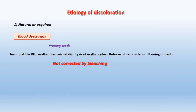Another cause is blood discoloration, which happens in primary teeth due to hemolytic anemia called erythroblastosis fetalis. The child has a different RH type from the mother, leading to RH incompatibility where some of the mother's blood enters the fetal circulatory system, causing lysis of erythrocytes with release of hemosiderin that causes staining of the teeth. Unfortunately, this type of discoloration cannot be corrected by bleaching.